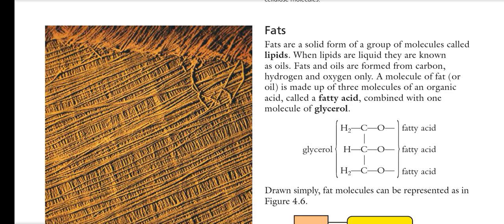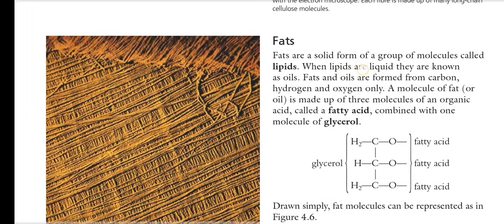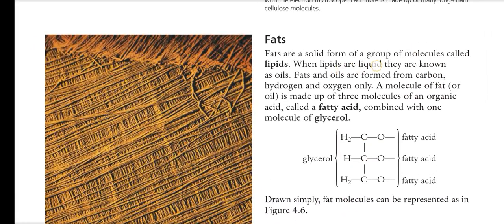Hello students, today we will discuss the structure of fats. In the previous lecture we discussed carbs, and today our topic is fats. Fats are the solid form of a group of molecules called lipids. These are not polymers because they are a heterogeneous group of compounds. When lipids are liquid they are known as oils, and when they are solid they are called fats.